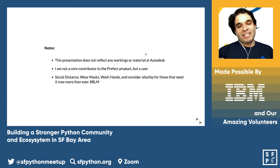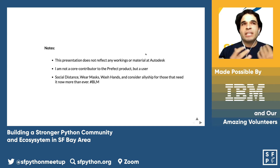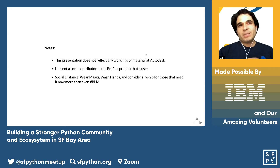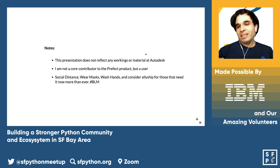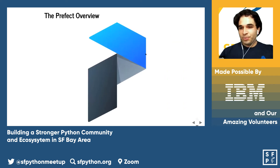Last thing is just remember to social distance, wear a mask, wash hands. And then something towards the end is just a quote from Thomas Paine: 'Whatever is my right as a person is also the right of another, and becomes my duty to guarantee as well as to possess.' So now let's get on to a primer on Prefect.